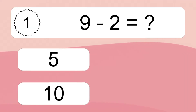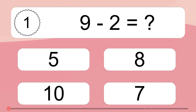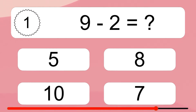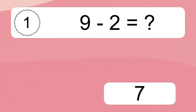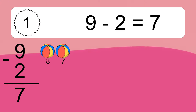9 minus 2 equals what? 9 minus 2 equals 7. Let's count it: 8, 7.